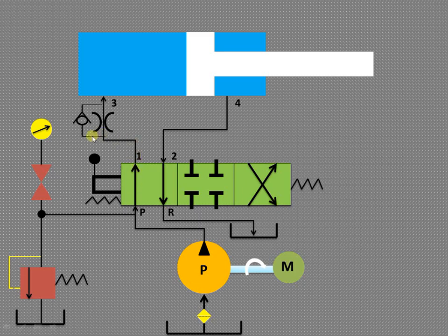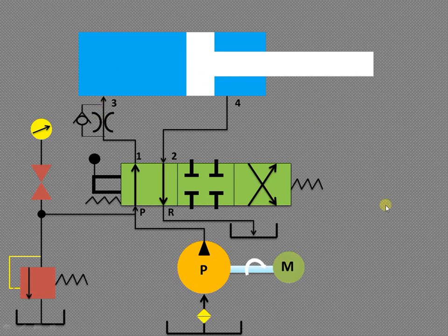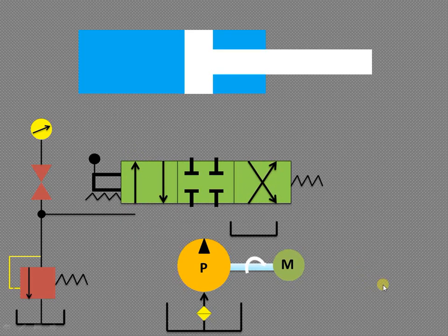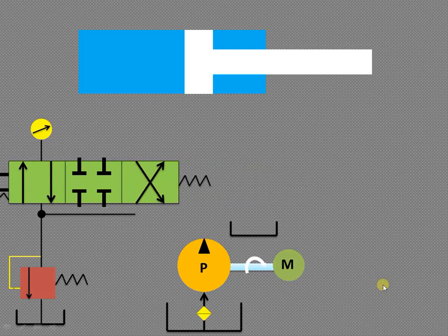Now let us understand how this flow control valve works. The liquid comes in but cannot go through the check valve side — that is a no-flow condition — so it must flow through the restricted opening. As a result, the piston will move slowly in the forward direction. This is the left envelope mode.